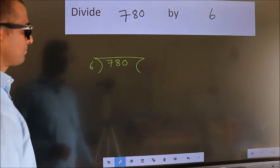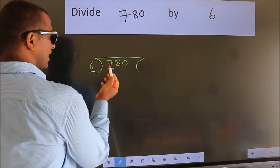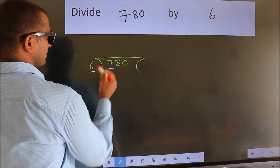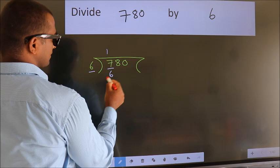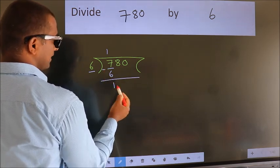Next. Here we have 7, here 6. A number close to 7 in 6 table is 6 times 1 is 6. Now, we should subtract. We get 1.